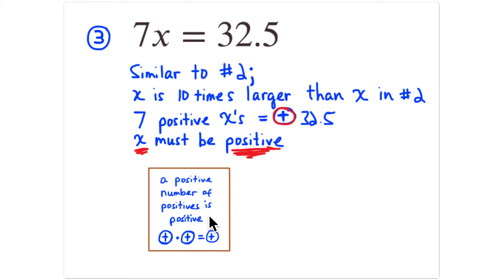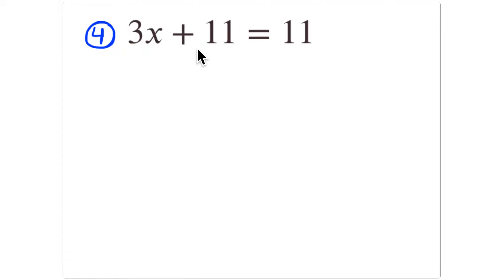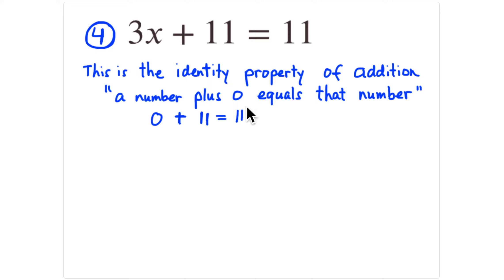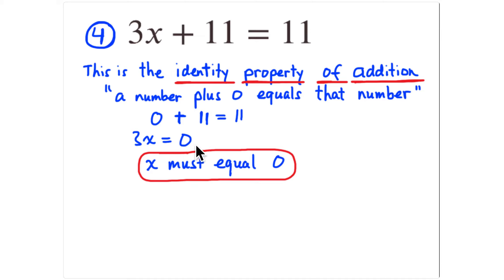Problem 4: you're taking some amount, adding it to 11, and getting 11 as the answer. The only way that works is the identity property of addition: a number plus zero equals that number. So 3x has to equal zero, therefore x must equal zero — because three times zero is zero, and zero plus 11 equals 11.